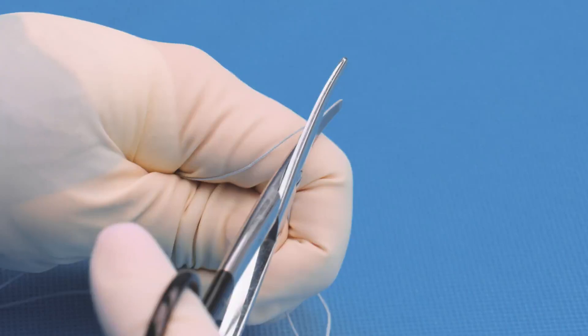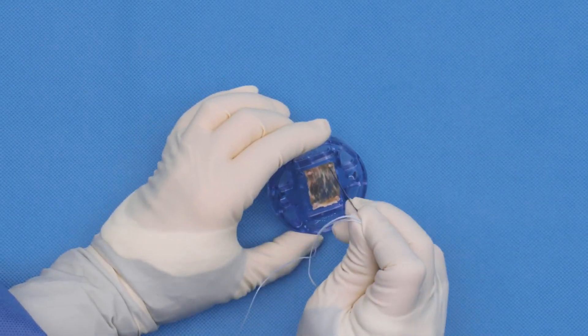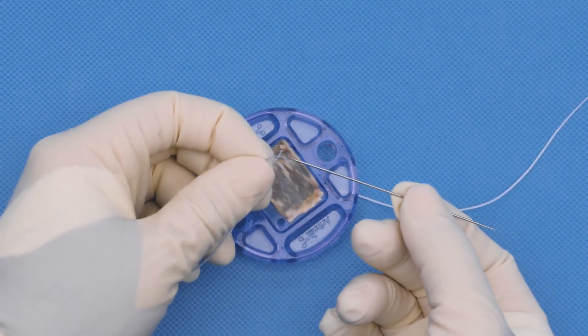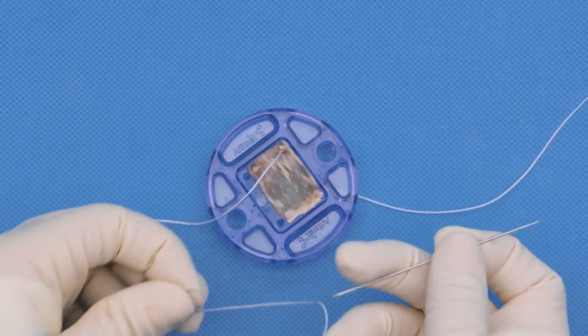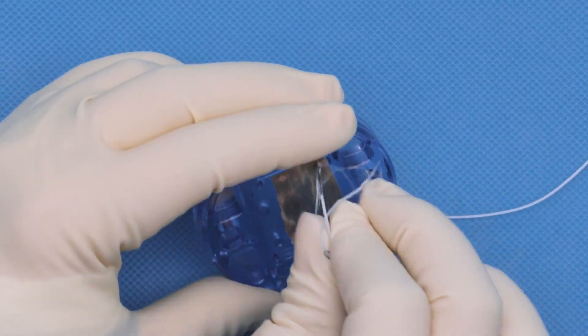Cut the thick part of the fiber loop off, and use the keith needle to pass one end of the suture through the corner of the graft. Remove the needle and thread it onto the opposite end of the suture. Pass the other end of the suture through the graft, creating a mattress stitch.